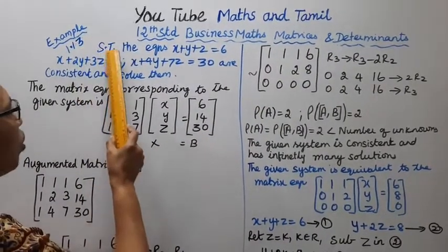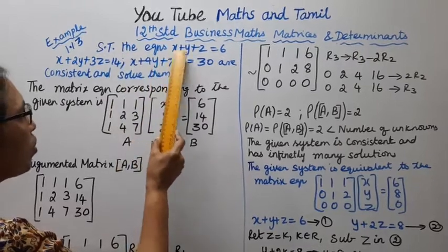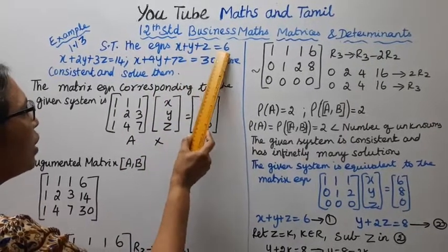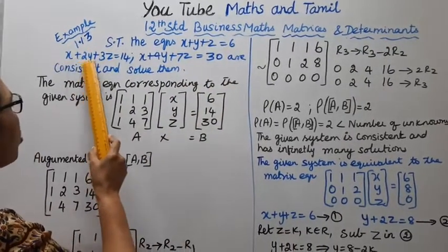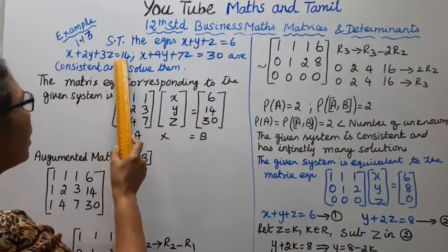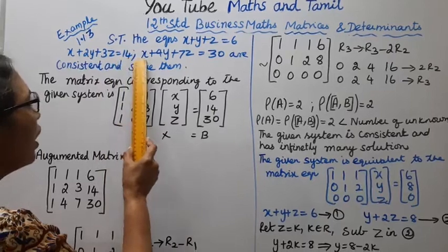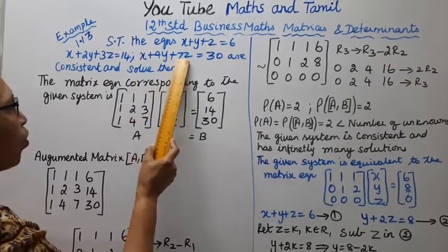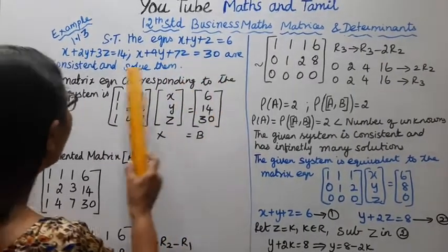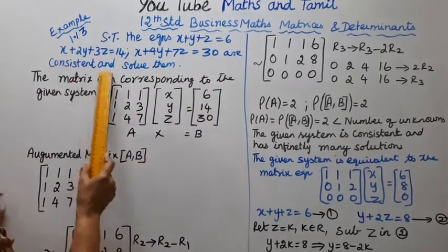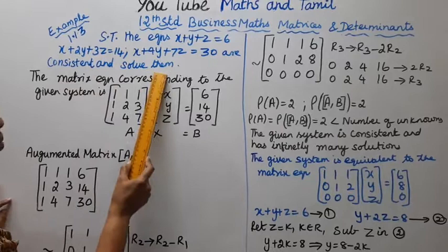Show that the equations x plus y plus z equal to 6, x plus 2y plus 3z equal to 14, x plus 4y plus 7z equal to 30 are consistent and solve them.